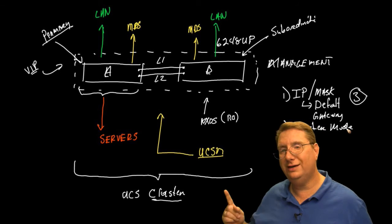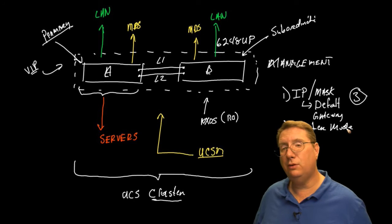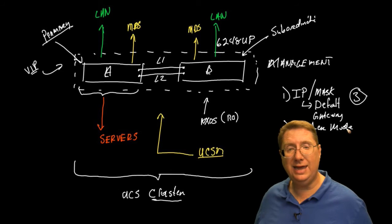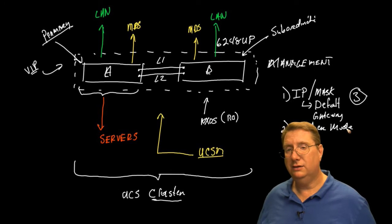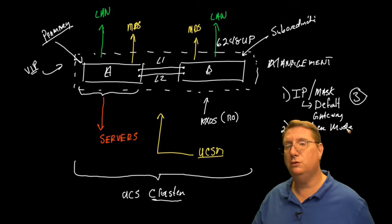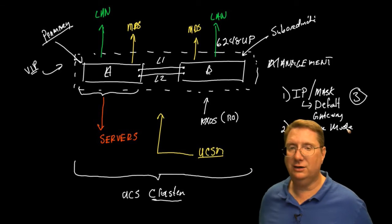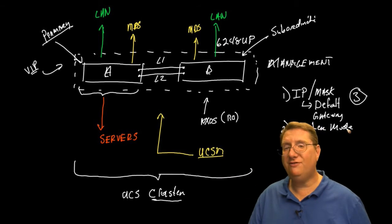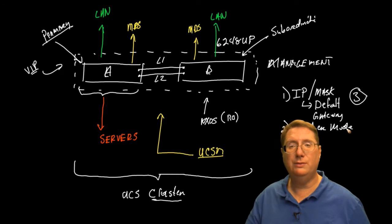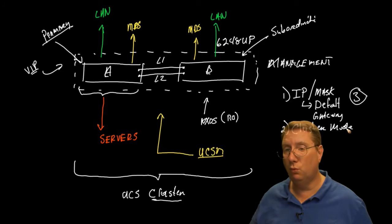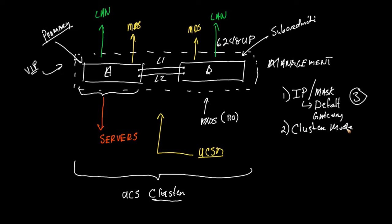Just keep in mind I can have configurations where I only have one FI. However, understand that that FI can only connect to one IOM, which means I'm only going to have pathing from my chassis to my northbound assets — my SAN and my LAN — via one link. There's not going to be an alternate FEX or IOM module in the UCS connecting to Fabric Interconnect A. The left IOM connects to Fabric Interconnect A and the right must connect to Fabric Interconnect B. We're not allowed to connect both IOMs to a single fabric interconnect.